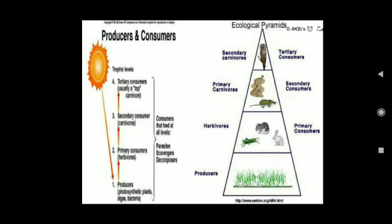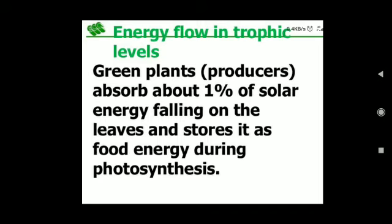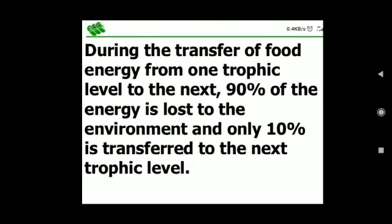Regarding energy flow in trophic levels: green plants, the producers, absorb about one percent of solar energy falling on their leaves and store it as food energy during photosynthesis. During the transfer of food energy from one trophic level to the next, 90 percent of the energy is lost to the environment and only 10 percent is transferred to the next trophic level.